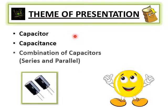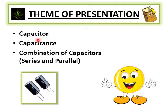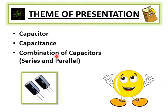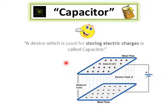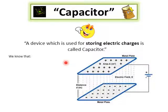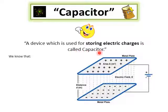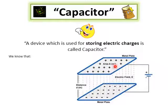Bismillah ar-Rahman ar-Rahim. Assalamu alaikum students. Today we are going to discuss the topics: capacitor, capacitance, and the combination of capacitors in series and parallel. A capacitor is simply defined as a device which is used for storing electric charges. It has two parallel plates in the form of terminals which we join to a battery.